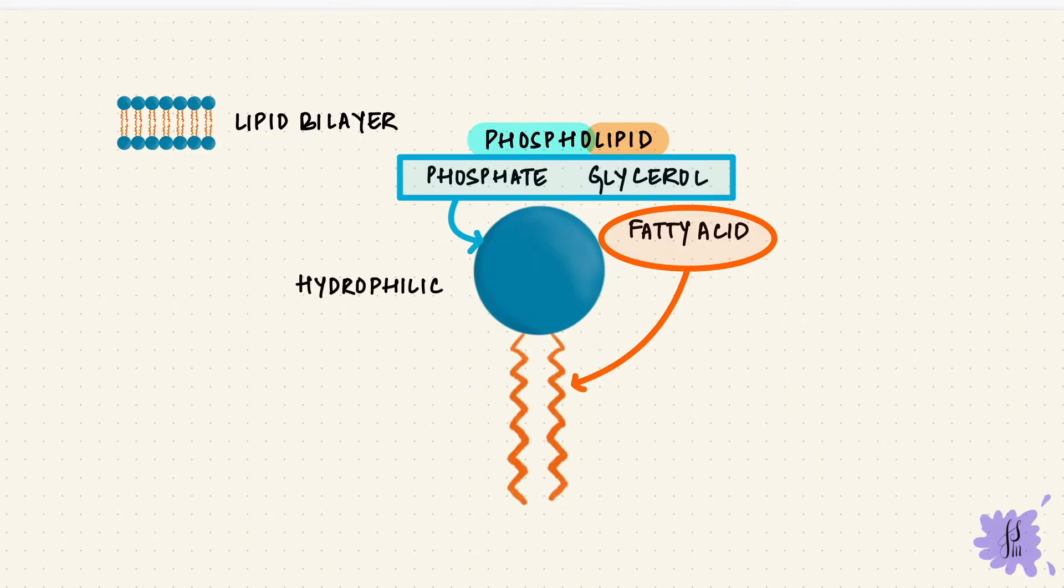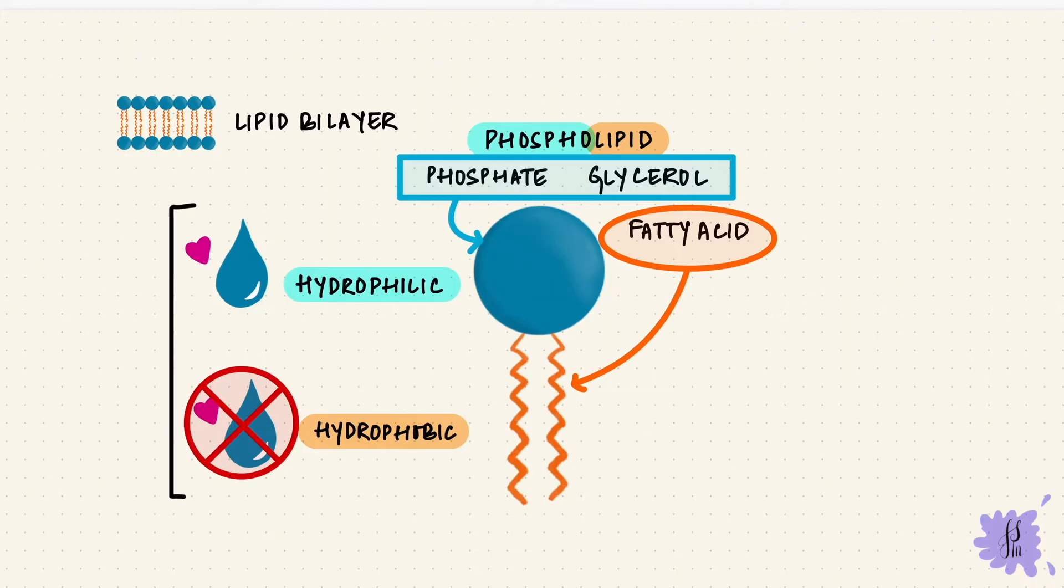The head is polar and hydrophilic, meaning it likes water. The tails, those fatty acids, are non-polar and hydrophobic. They do not like water. Since there's a hydrophilic and a hydrophobic component, these are amphipathic.